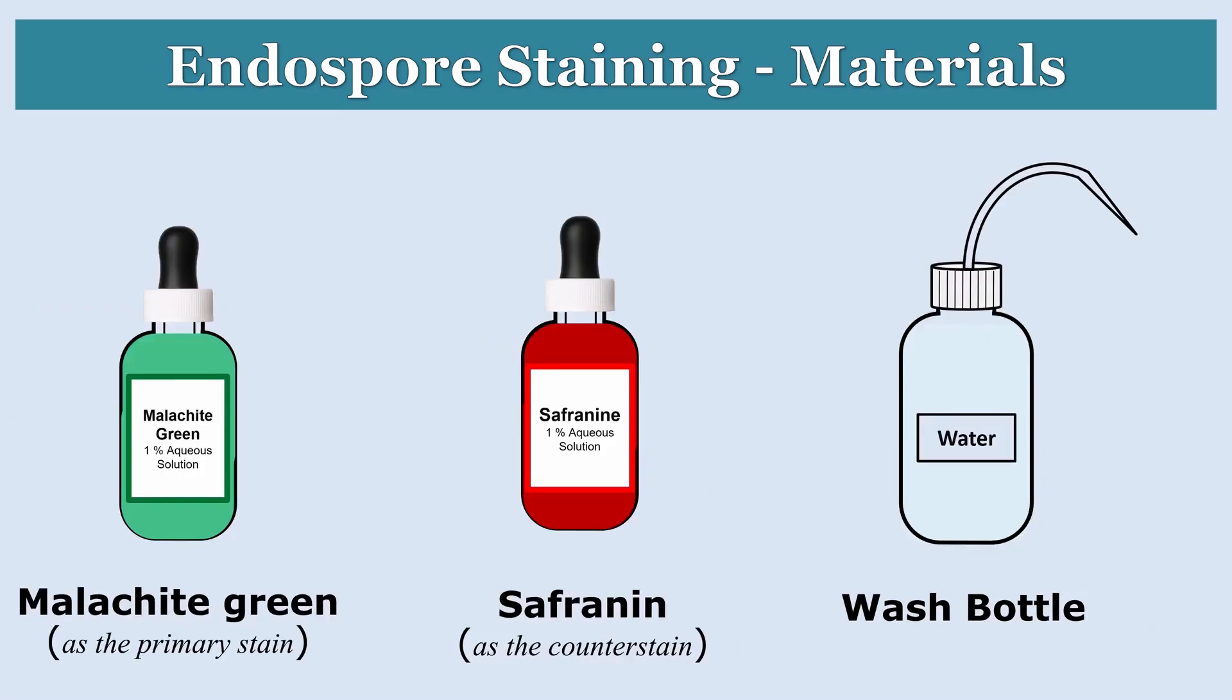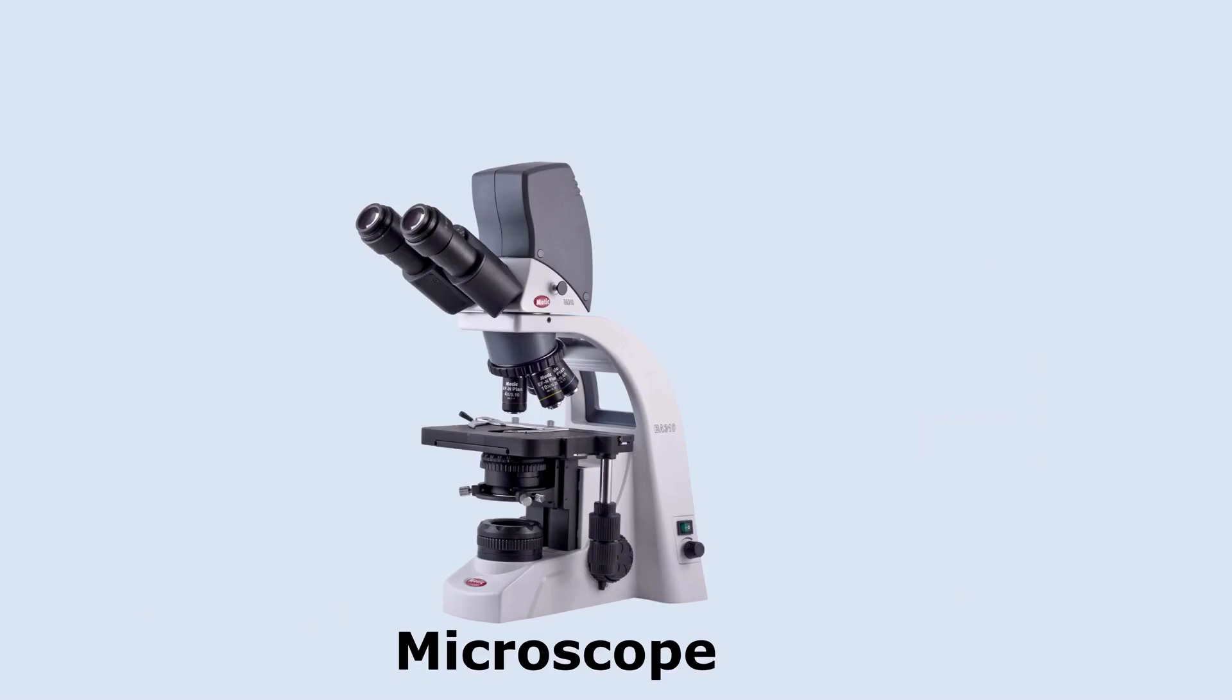And for staining, we will use reagents such as malachite green as the primary stain and safranin as the counterstain. We also need a wash bottle containing tap water for washing excess stain. Most importantly, a microscope is required to observe the stained smear.